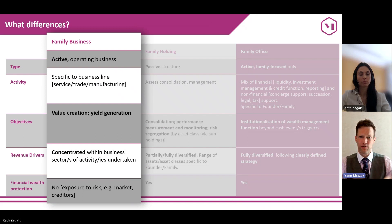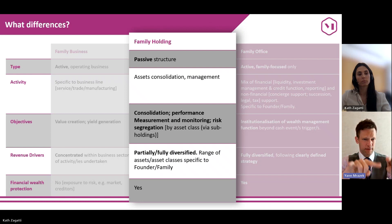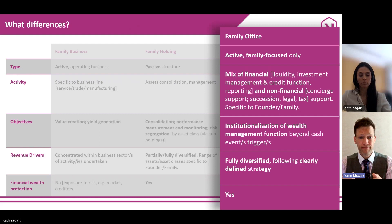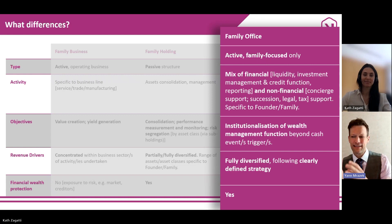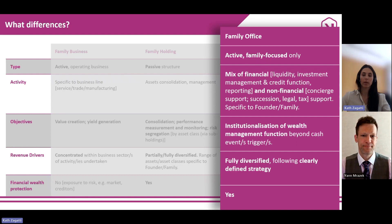Then we come to the objectives of these various verticals. If I look at the family business, the key objective there is likely to be value creation and revenue generation over time as an active operator. The objective of a family holding is likely to be a passive investor — not an active operator in the underlying structures. The family holding is likely to focus on consolidation as well as the segregation of different assets and asset classes. The SFO, on the other hand, will aim at institutionalizing the wealth management function of a family. But beware, because this is not set in stone — the objectives can and will likely change over time. Constant monitoring of what the family needs and adjustments so that the SFO still meets the needs of the family at all times are key.